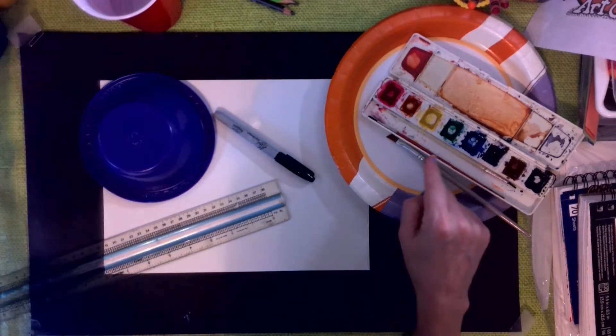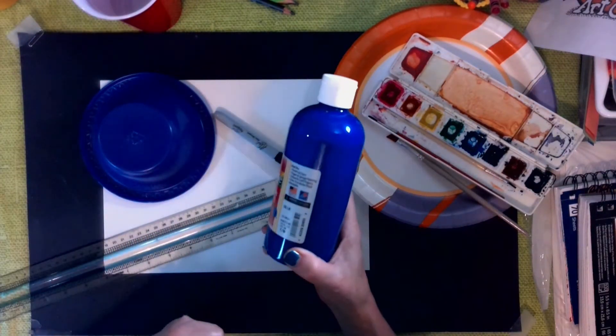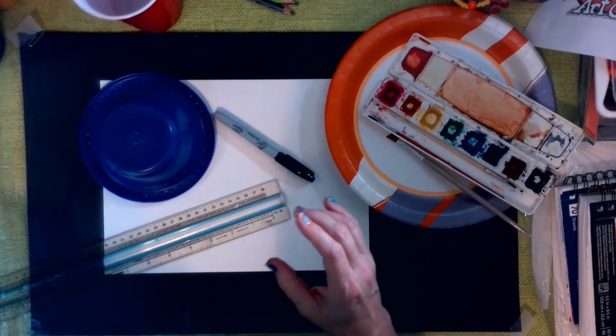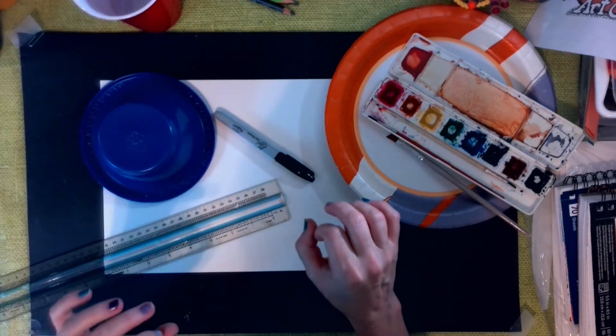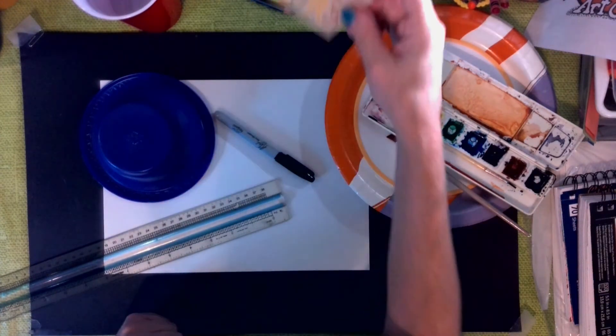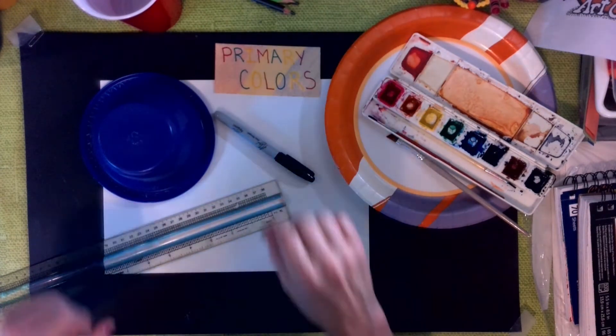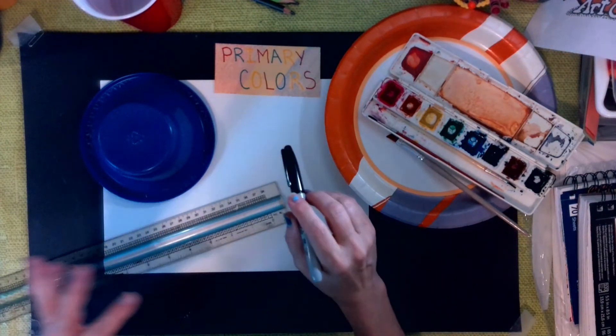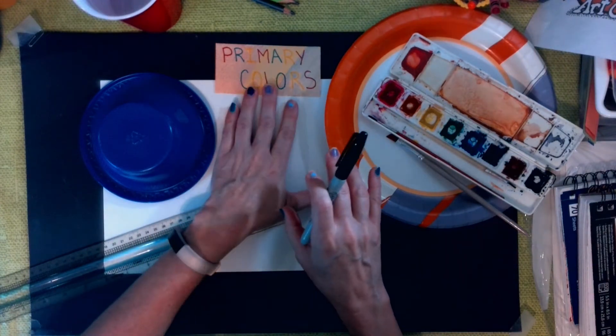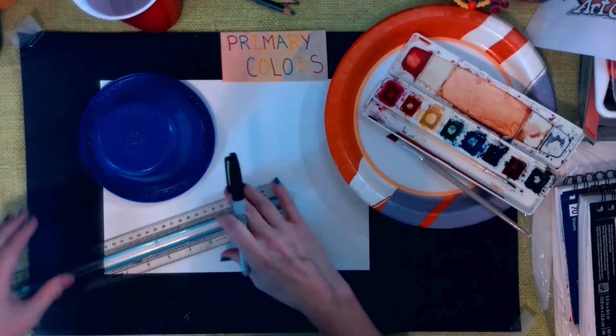Again we're using watercolors but you can also do it with other paints and I will do another one showing these washable tempered paints. But the three primary colors are red, yellow, and blue. Primary. We're going to create secondary colors by mixing these together.